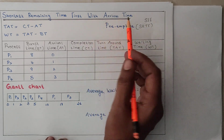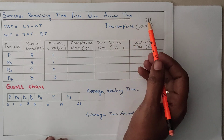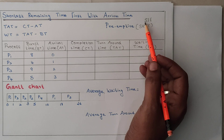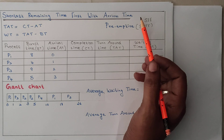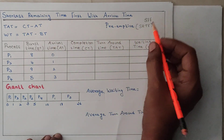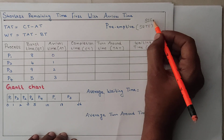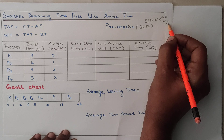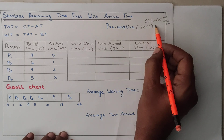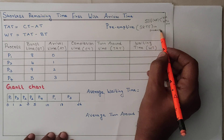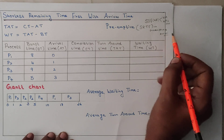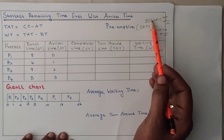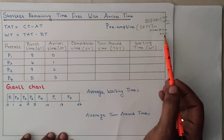SRTF will have one condition: with respect to arrival time. Without respect to arrival time, it is normally SJF. If there is no arrival time, then how can we preempt the process? There is no need to preempt. Preemption happens only with respect to arrival time. So there are three categories in shortest job: SJF with arrival time, SJF without arrival time, and SRTF with arrival time.